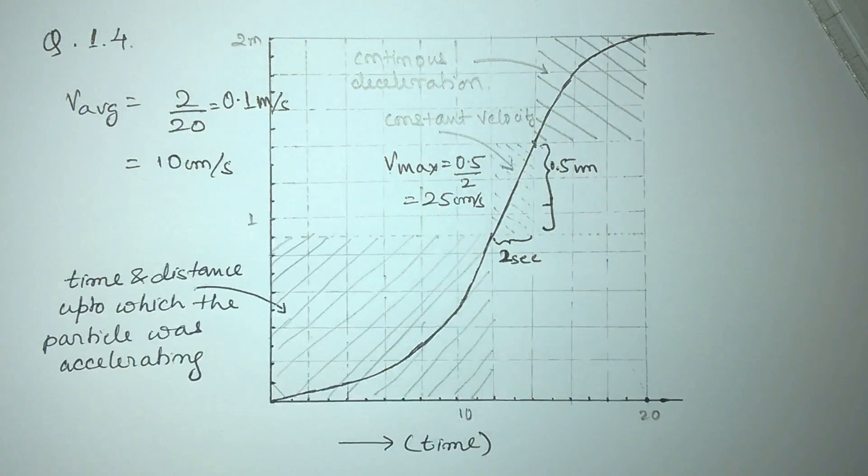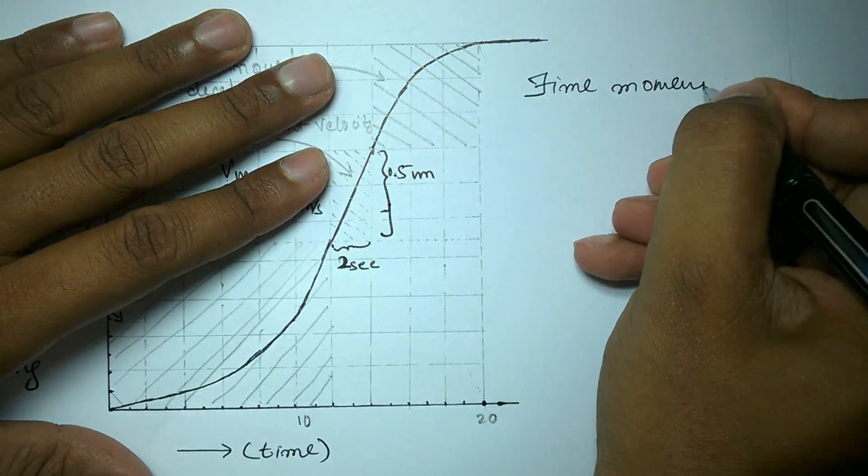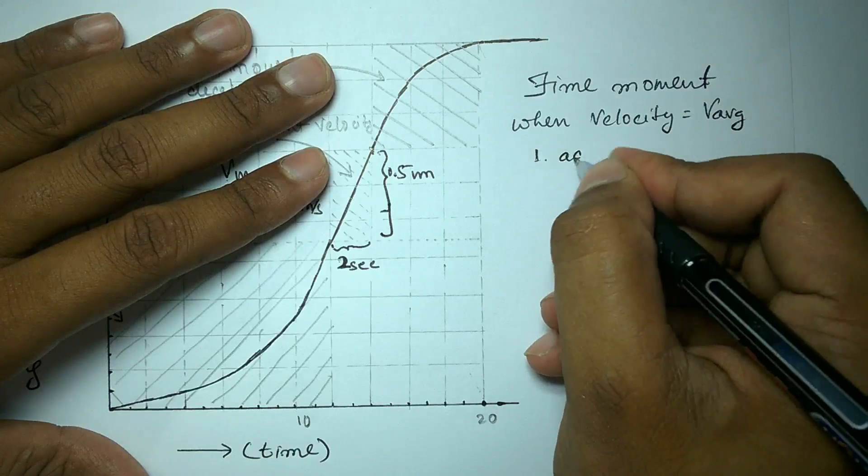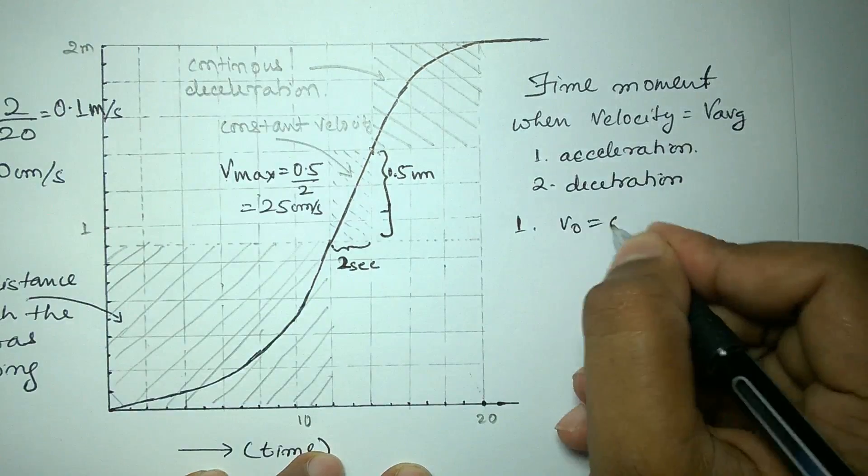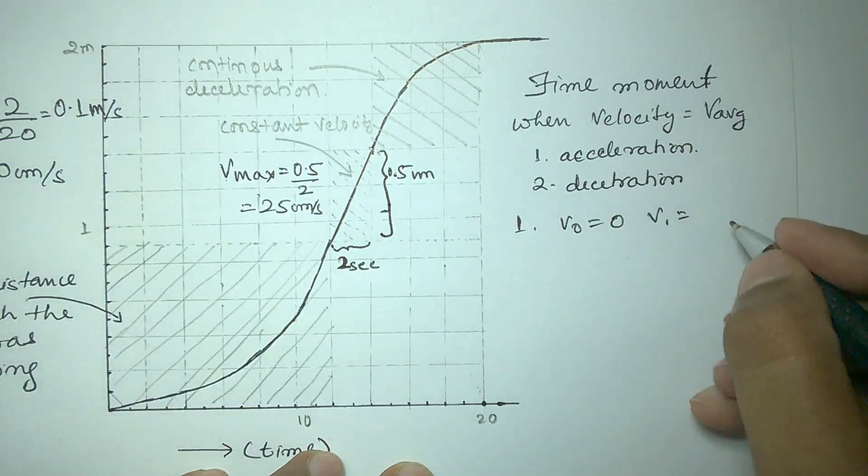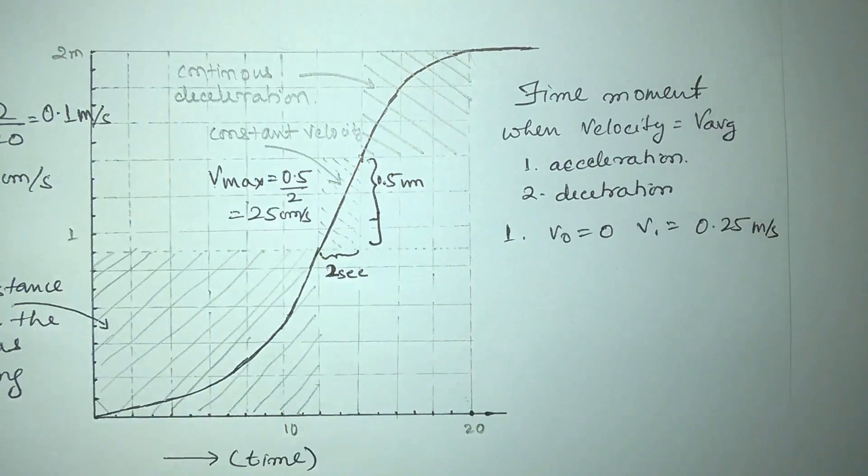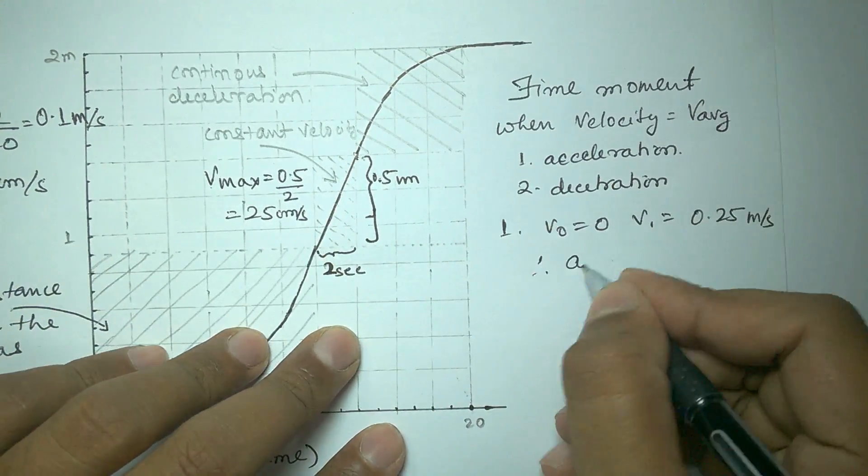To calculate the time moment at which the velocity of the particle will be equal to average velocity, which will happen two times in the graph, one during acceleration and the other during deceleration, we can calculate acceleration first by simply getting the ratio of the difference of velocity to that of the time taken to reach the maximum velocity.